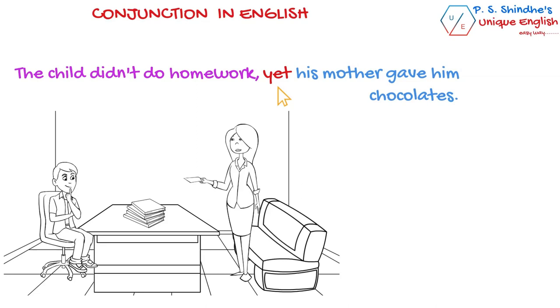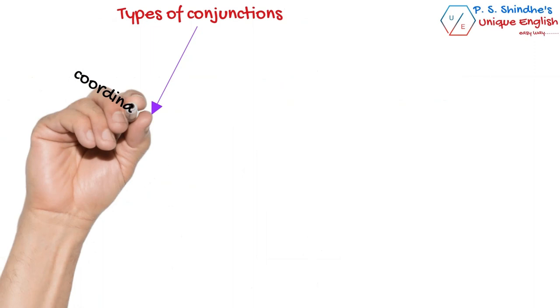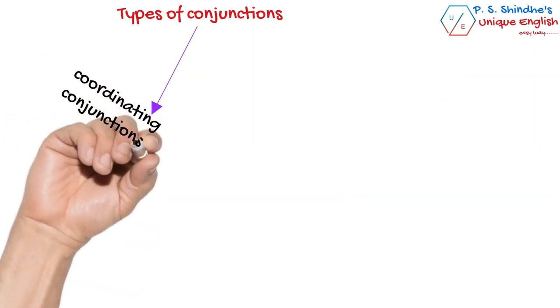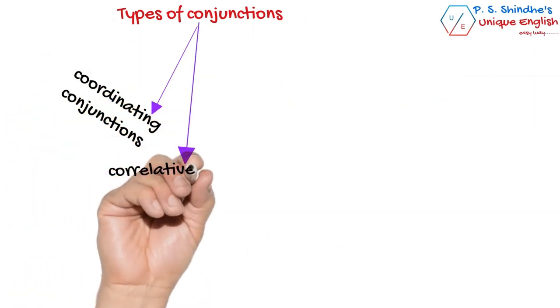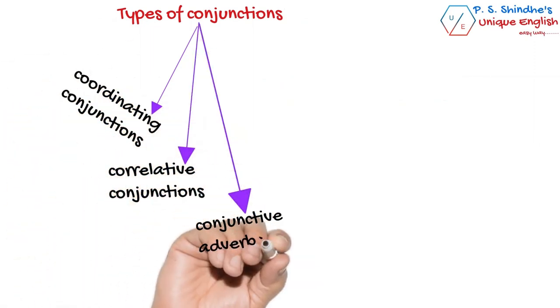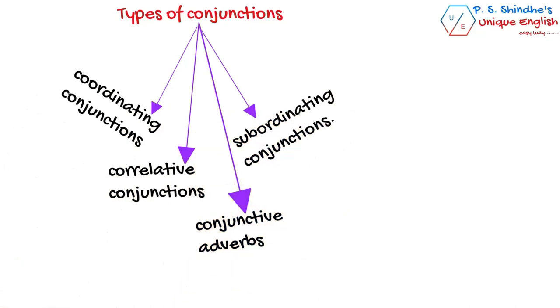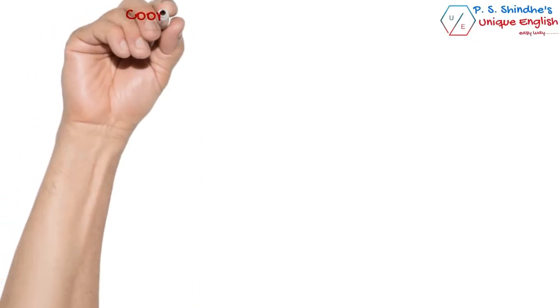Now we will proceed with the types of conjunctions. Primarily, there are four types: coordinating conjunctions, correlative conjunctions, conjunctive adverbs, and subordinating conjunctions.